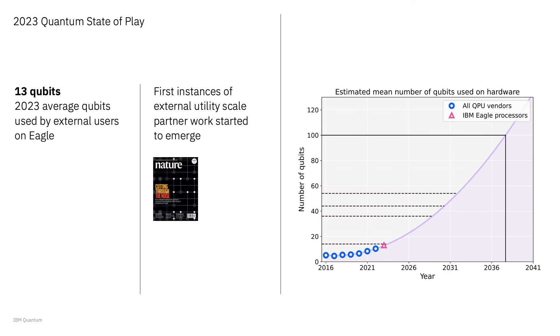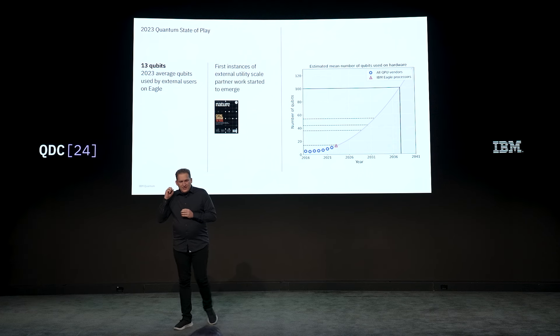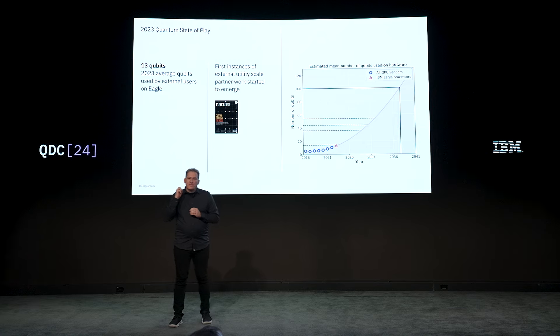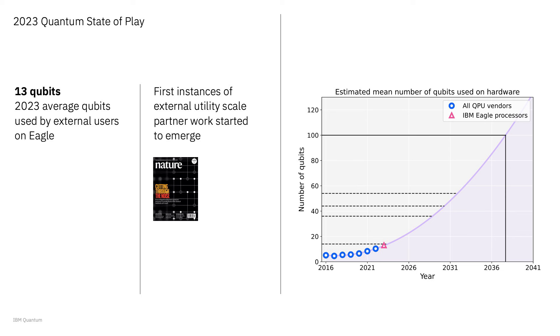We don't want to be the only ones searching for advantage. We know that you, the users, are the experts in your fields and you know where to look. Last year we showed a slide showing the average number of qubits people are using. In 2023 the average was 13 qubits, with a few papers at the 100-qubit range.